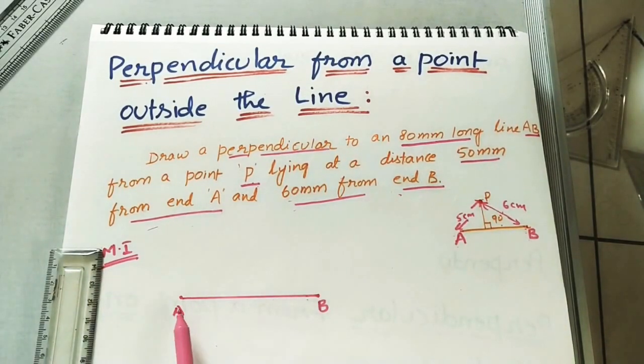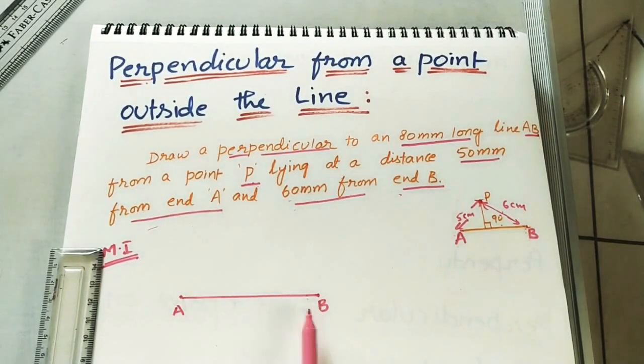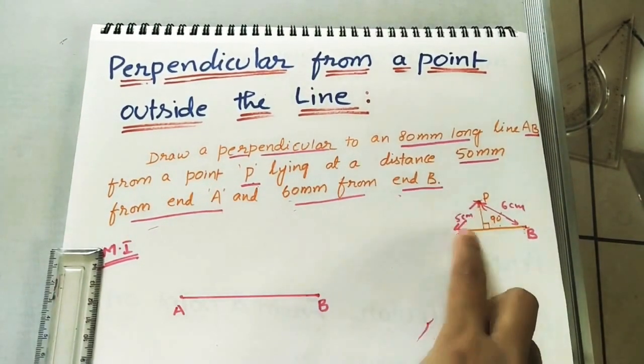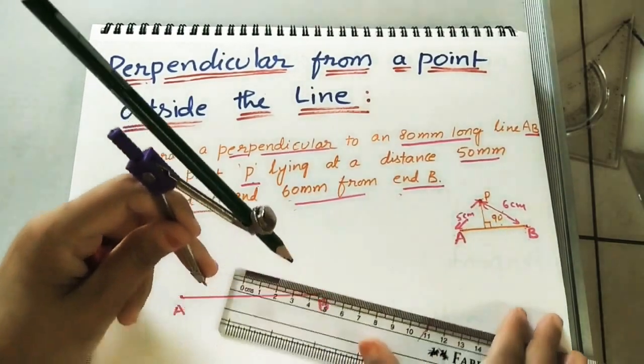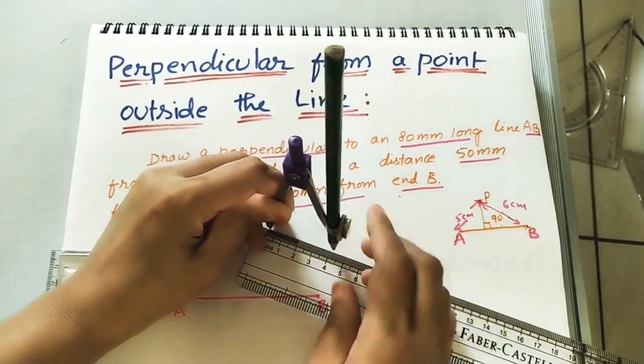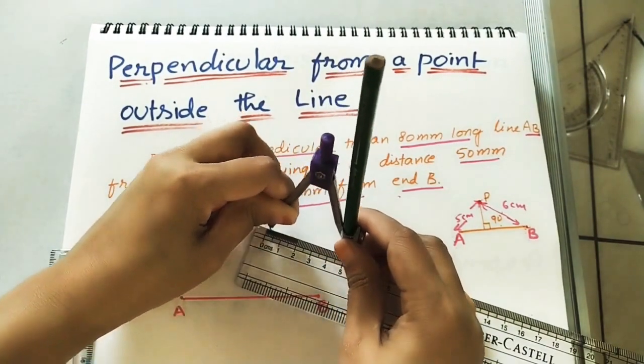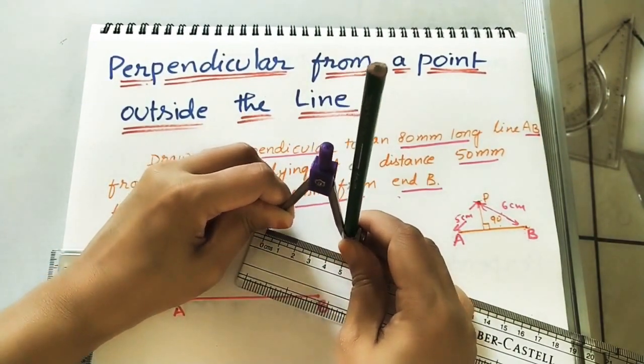Here take the first method. In it I did 8 cm line. Write capital letters. After doing the line mark P point. From A it is 5 cm. So take 5 here. Take correct dimensions.